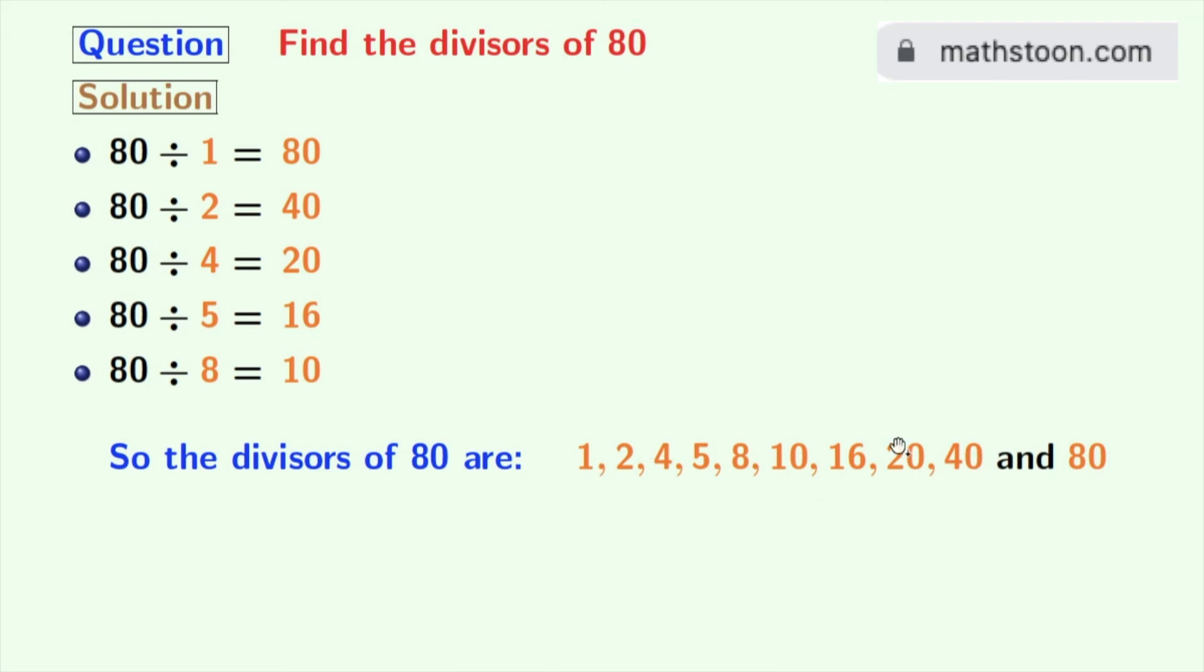Now, if we look at these divisors, you can see that 2 and 5 among these numbers are prime numbers because these two numbers do not have any divisor other than 1 and this number itself. So, we can see that the prime divisors of 80 are 2 and 5.